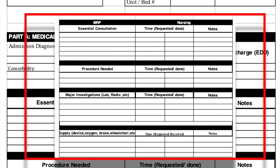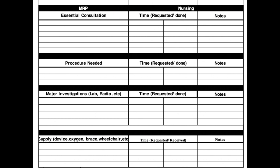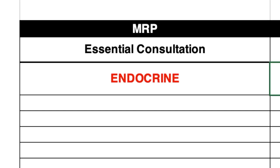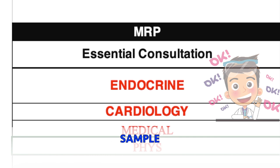Following the consultant's corner in Part A are the four essentials considered in the patient treatment plan. These are essential consultation, procedure needed, major investigations, and supplies needed. The essential consultation portion is to indicate what specialty the patient is referred to. This can be endocrine, cardiology, medical, facial therapy, or others.